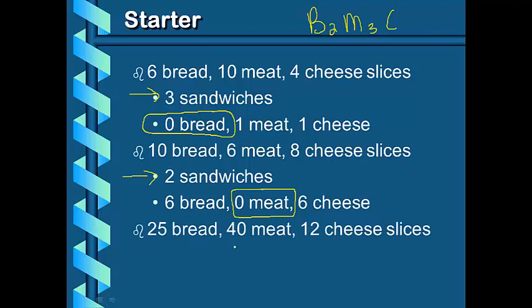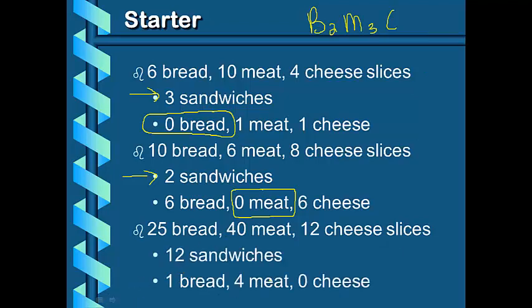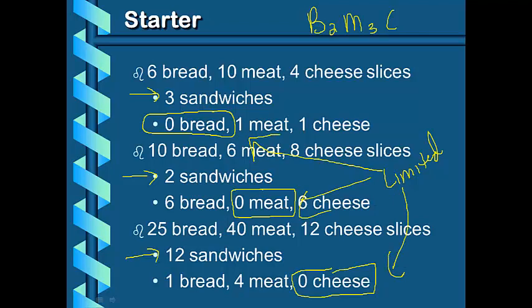Last but not least, we've got 25 pieces of bread, 40 pieces of meat, and 12 pieces of cheese. Following our recipe, we can make 12 total sandwiches. We're going to have 1 piece of bread left over, 4 pieces of meat, and 0 pieces of cheese. Now, we use this to start with the example because it's pretty easy to understand that the ones that we had 0 left of are the ones that limited our ability to make any more sandwiches. And then, we also had some extras left over.